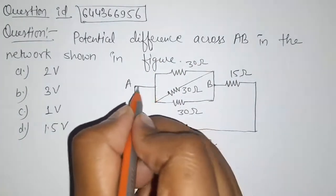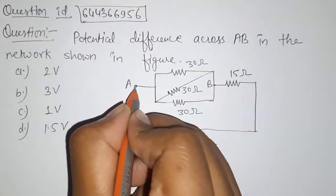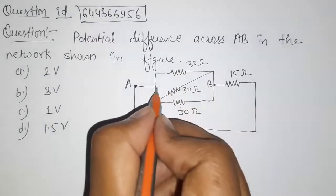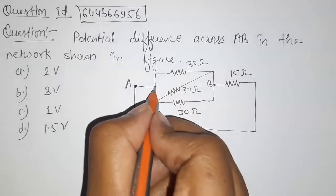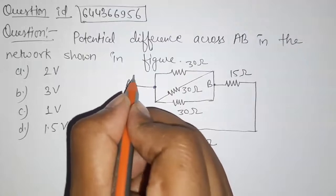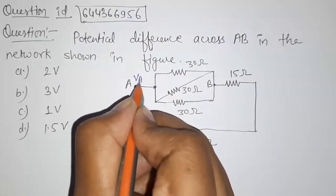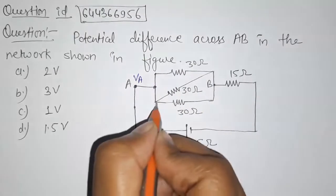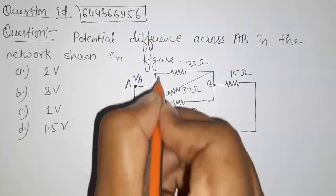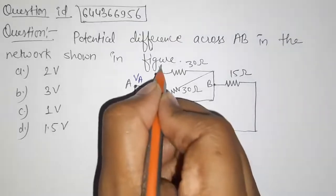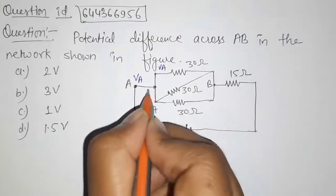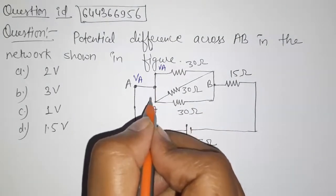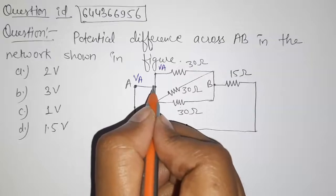We have to find the potential difference across point A and point B. Let us take the potential at point A as VA. The potential will be VA at all nodes connected to A because there is no resistance between those points, so there is no potential difference.